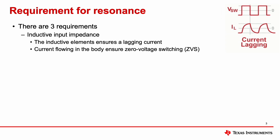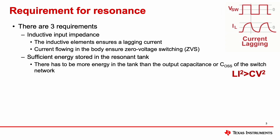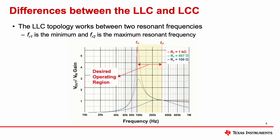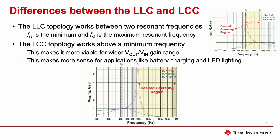The second requirement for resonance is there has to be sufficient energy stored in the resonant tank. There has to be more energy in the tank than the output capacitance, or COSS, of the switch network. This means one half L·i² has to be greater than one half C·V².